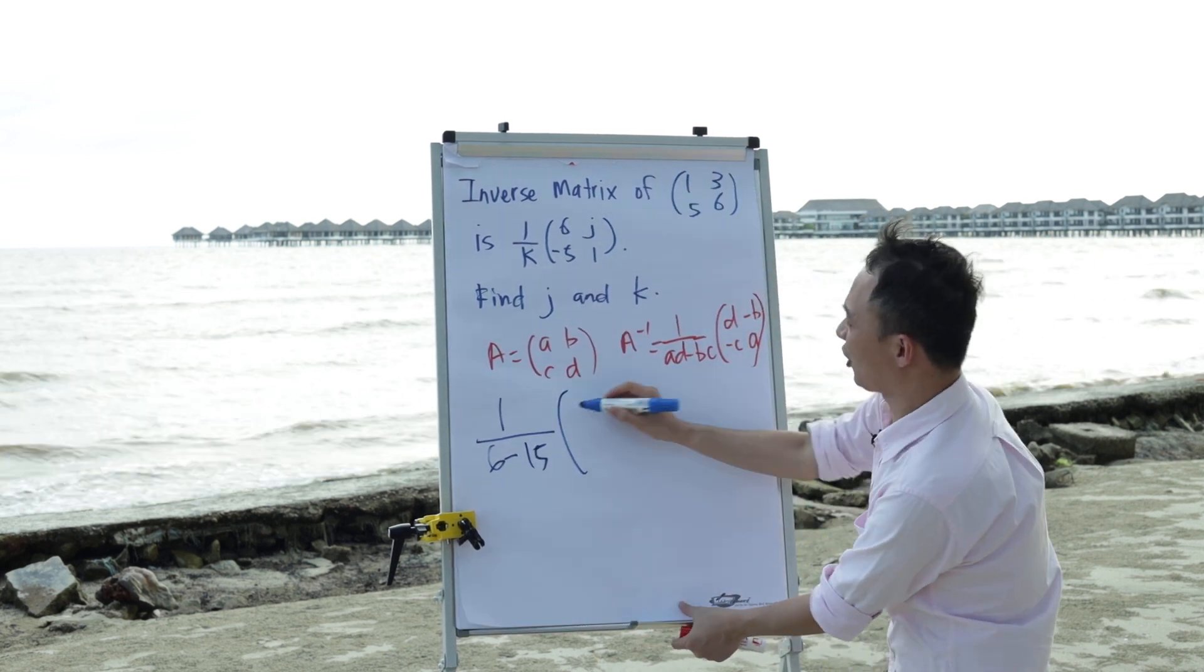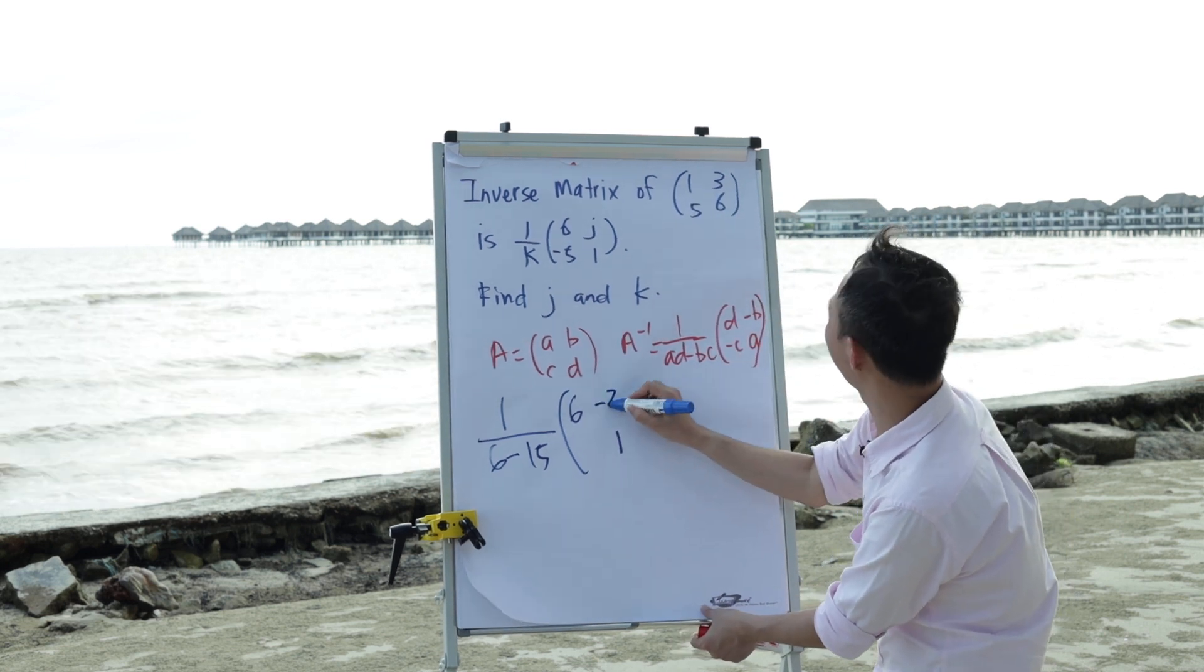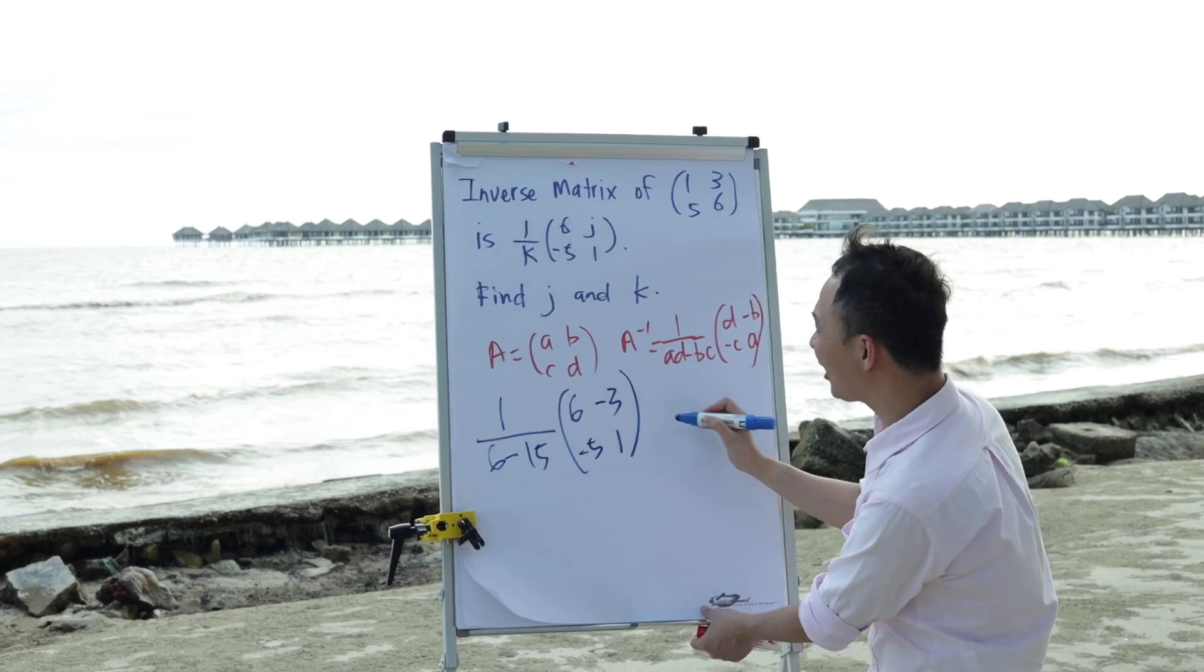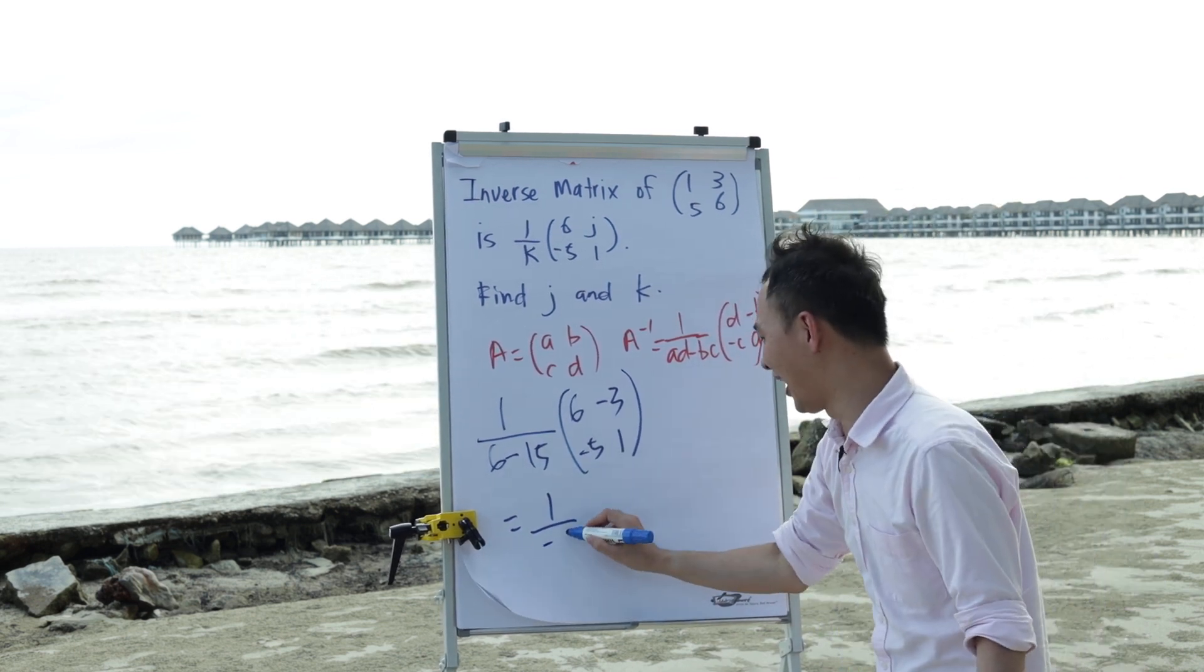And then a and d will swap places, 6 and 1 will swap places, b and c will add negative. Negative 3, negative 5. Alright, then we just need to solve this one, 1 over 6 minus 15 will get negative 9.